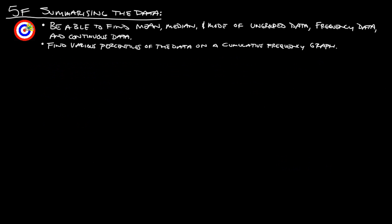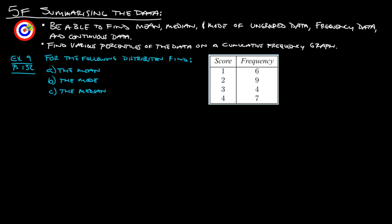Let's try it out on our own. Here's example 9 from page 132: for the following distribution, find the mean, median, and mode. I'd highly suggest pushing pause right now and trying to calculate this on your own, especially if you found that last example easy. Then start it back up and make sure we get the same thing.